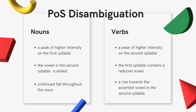As far as pitch is concerned, there seems to be a clearer continued fall throughout the noun, starting from the peak on the first syllable. In the verb, there is a rise towards the stressed syllable with a relatively steady downdrift following it. 'Present' — 'present'.